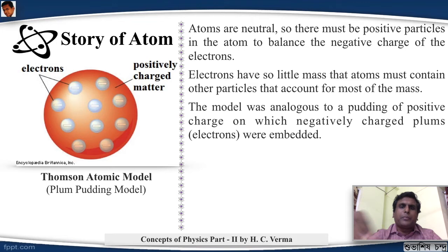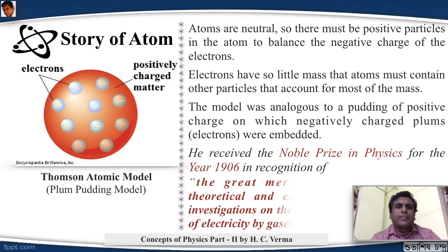According to him, it was a cake or a pudding on which plums were kept. If you don't know what a plum pudding is, you can identify it with the watermelon - the red part is your positive charge and the black seeds are your electrons. For this particular achievement, he received the Nobel Prize in physics for the year 1906, and he was in his recognition it was said the great merits of his theoretical and experimental investigations on the conduction of electricity by gases.